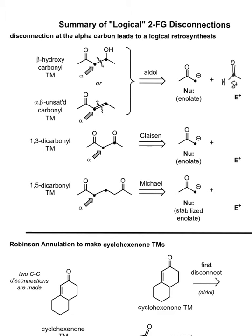Our disconnection is, once again, going to be at the alpha position — between the alpha and beta-carbons. The question is, what does our electrophile look like? We're still going to have a carbonyl, but we're going to add a leaving group on here. For example, if we had an ester, then after the enolate nucleophile attacks the ester, it's going to kick off that leaving group, so we get an acyl substitution resulting in a 1,3-dicarbonyl compound.